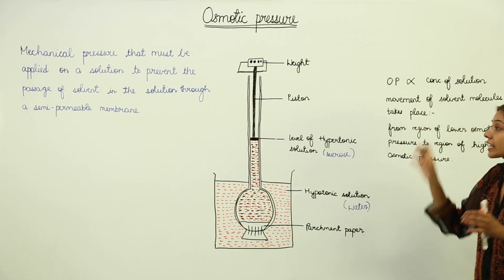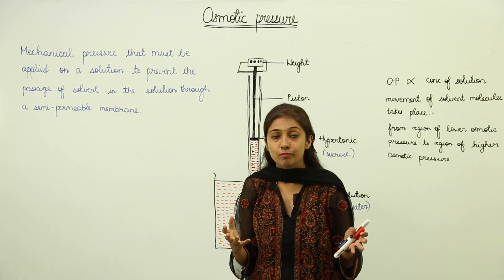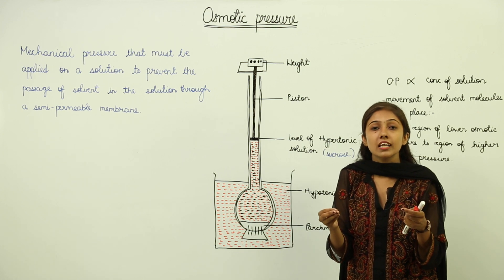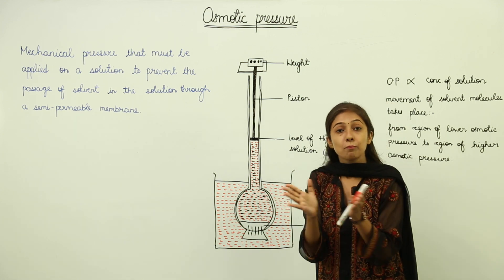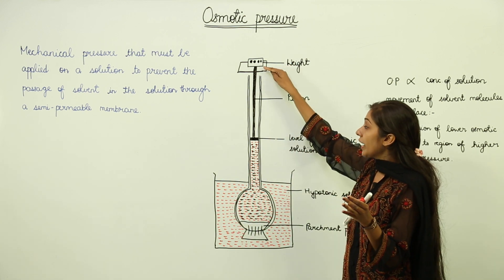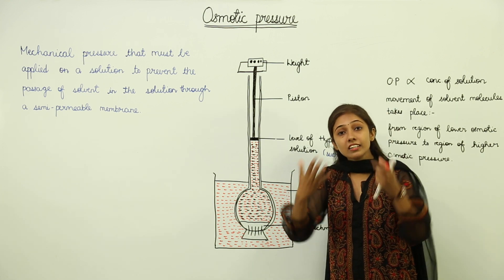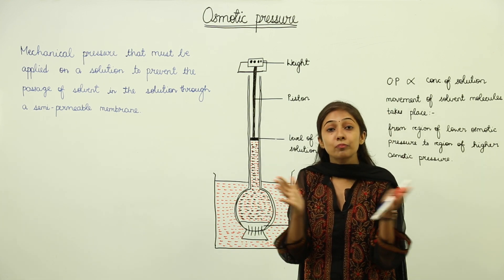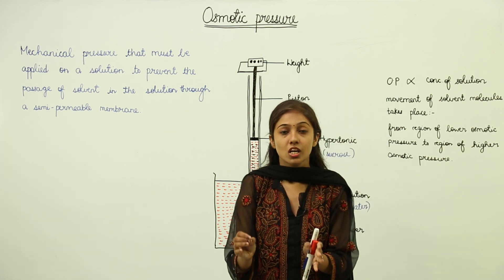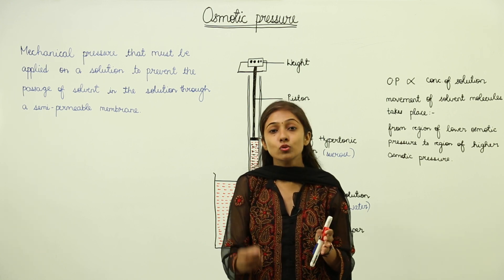Osmotic pressure is actually the pressure that is exerted by the solute particles. When we put the additional weight, since the solute particles are in motion — they are moving and they possess kinetic energy — they are going to arrange themselves in the available space, and in turn they are going to exert pressure. That pressure we are calling as osmotic pressure. So osmotic pressure is the pressure which is basically related to the solute particles.